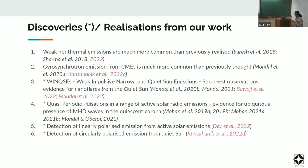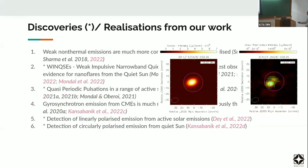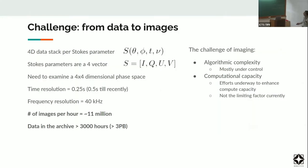We've also detected circularly polarized emission from the quiet sun, which was predicted in the 1950s but nobody ever had the imaging capability to confirm it — until now. And here's an example of that linearly polarized emission.